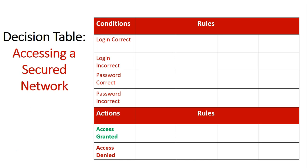The combinations of these conditions are going to give us one of two different actions. They're either going to be granted access to this secured network, or they're going to be denied access to this secured network. So let's move column by column. In the first column, we say the login is correct and the password is correct, and based on these conditions being true, the action of access granted takes place.